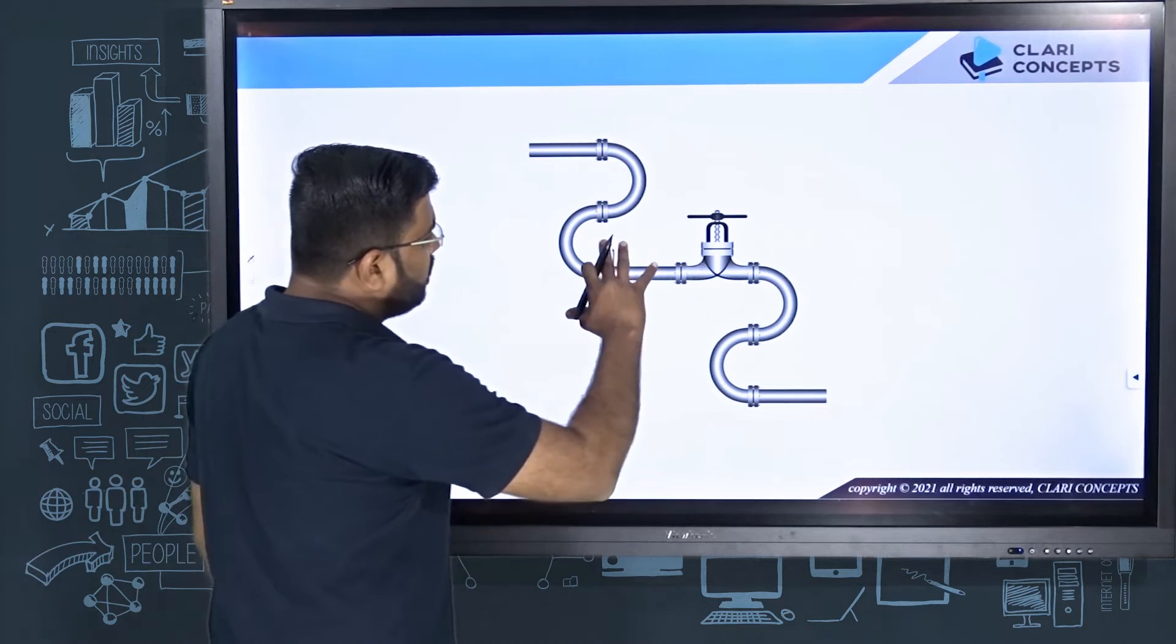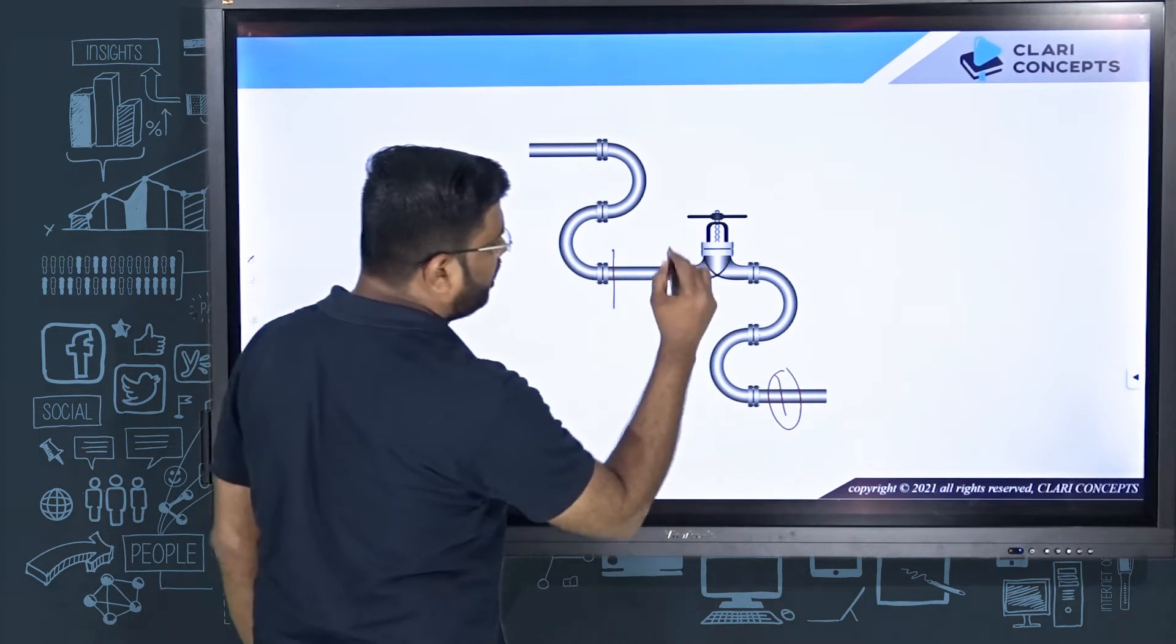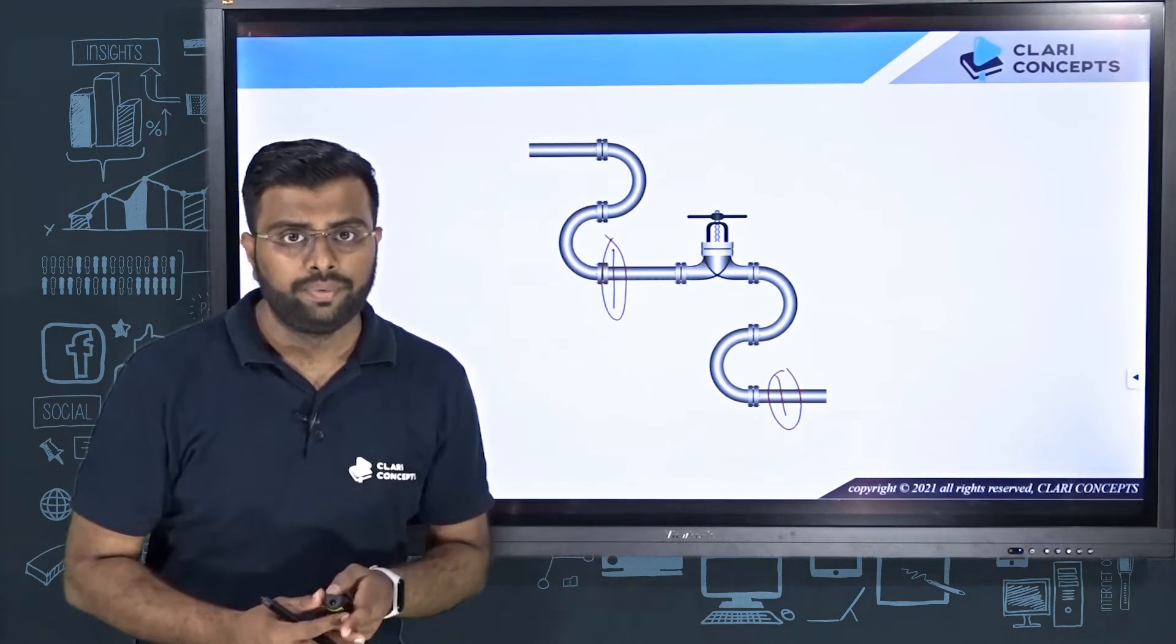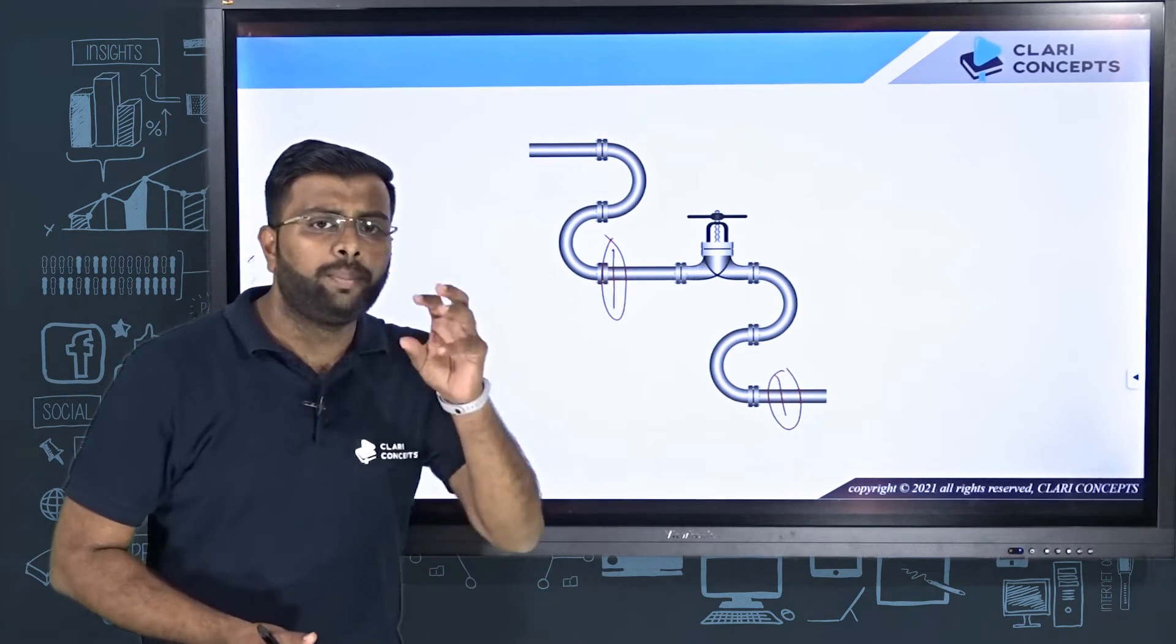What happens to energy when it flows from here to here? What is the energy contained by the fluid at this particular section and at this particular section? Now how will you quantify that in terms of joules, or joules per newton? How can you give the number to that particular fluid in terms of energy?